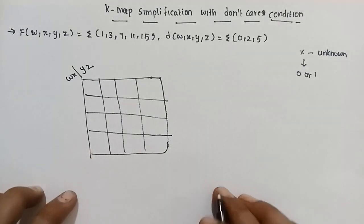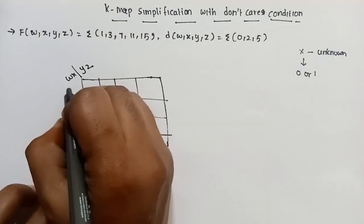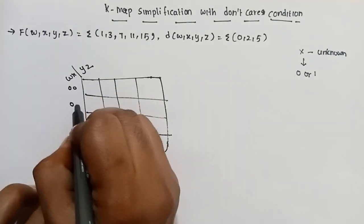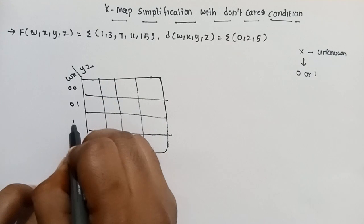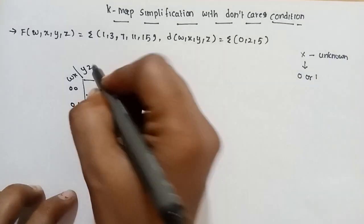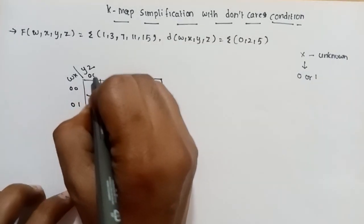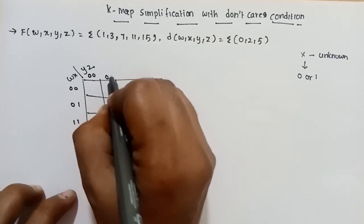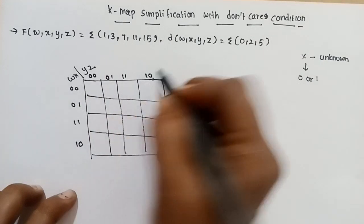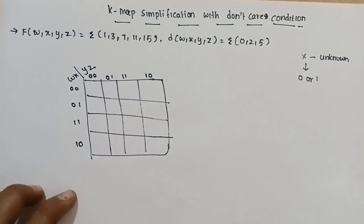So we draw the 16-square K-map. The first size values are 0, 0, 0, 1, 1, 1, 0 — same way 0, 0, 0, 1, 1, 1, 1, 0.